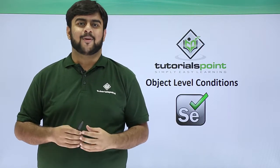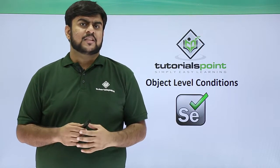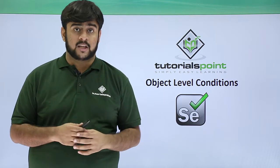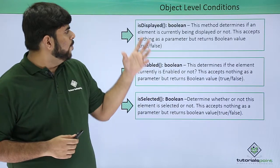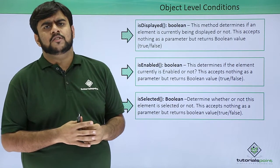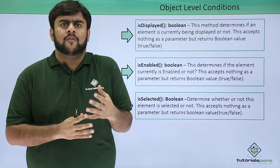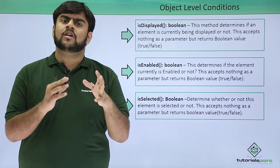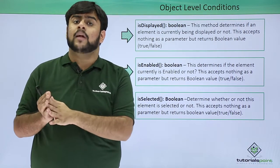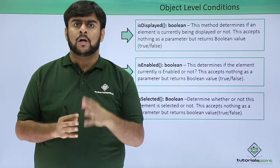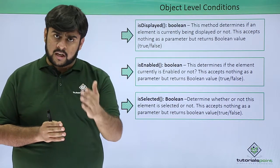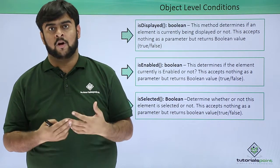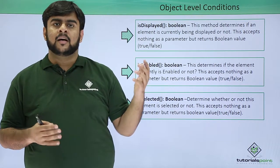Welcome to Tutorials Point. In this video we will be seeing the object level conditions and how we apply those object level conditions. By object level conditions, we check if an element is displayed or not, if it is enabled or not. All these conditions are applied on a particular element, and they return a boolean type of object or variable — it can either be true or false.